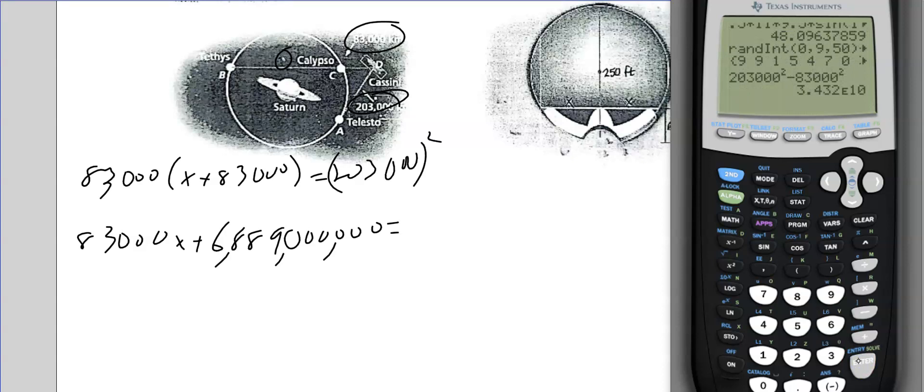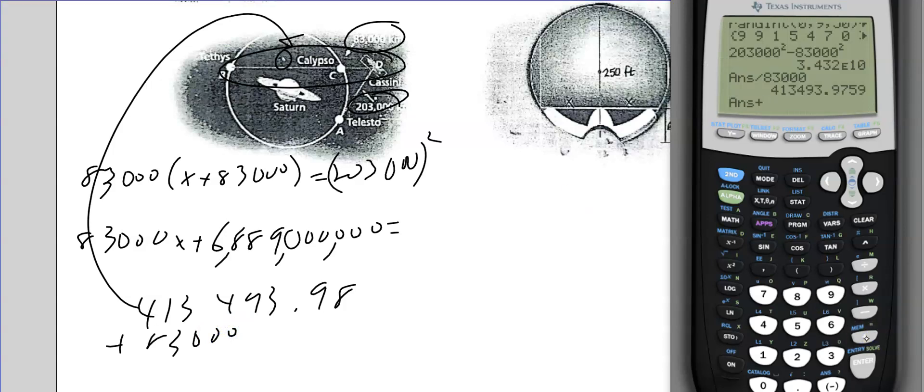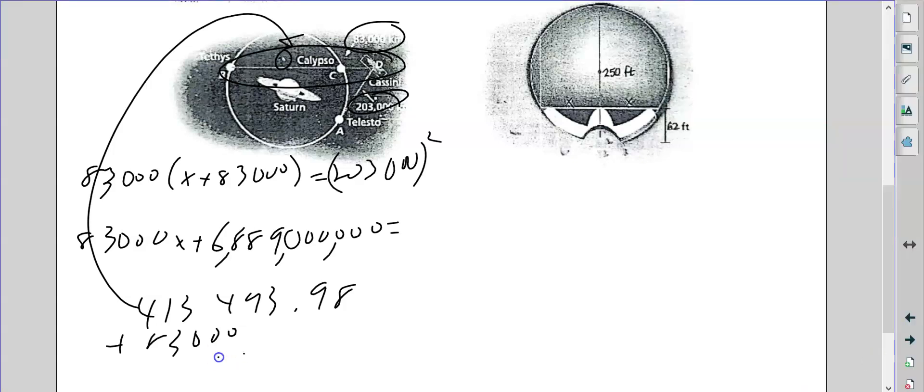Let me show you that. So instead of all this writing, you can just save yourself the time. Plus, you're going to get scientific notation for the 203,000. So you can type in 203,000 squared minus 83,000 squared. And it's still going to give you a huge number. But then you're going to divide by 83,000. Let the calculator do most of the work for you here. Because that's what's in front of the x. And there's your answer. 413,493.98. Now, that is the measurement right here. It is actually asking for the whole thing. So we need to add 83,000 to this. So plus 83,000. And there's our answer. 496,493 kilometers.